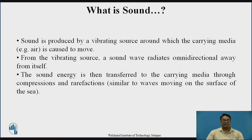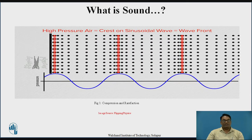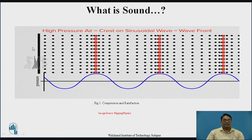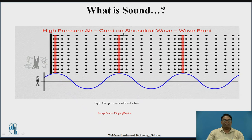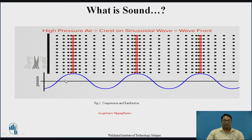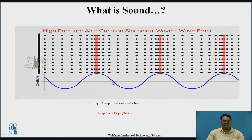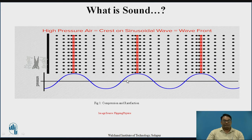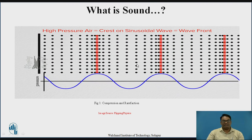These are similar to the waves moving on the surface of the sea. When we throw a stone on the surface of the sea, there are waves which propagate on the surface — these waves are nothing but compressions and rarefactions. This diagram gives a clear idea about compressions and rarefactions. The high pressure of air is the crest on the sinusoidal waveform. For the upper crest, compression is maximum, and for the lower crest, compression is minimum. Hence the upper crest is called compression and the lower crest denotes the rarefactions.